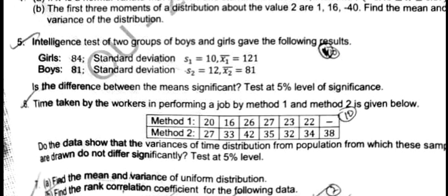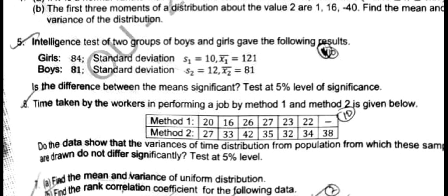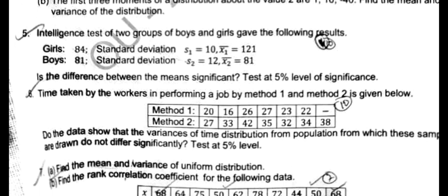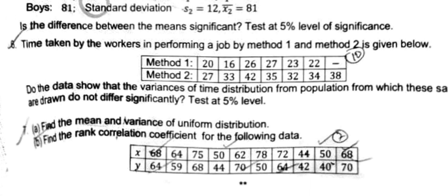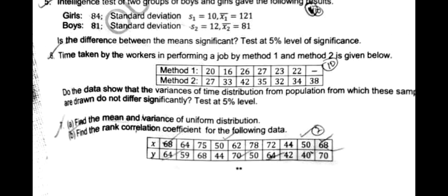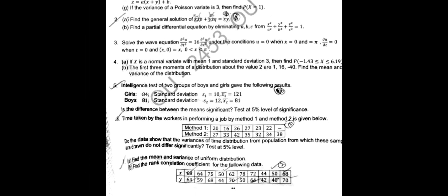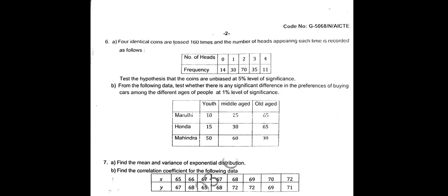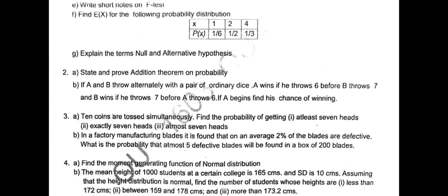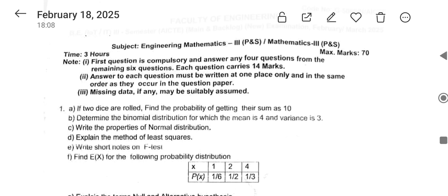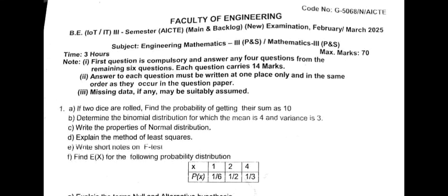Sixth one is variances, F-test. Seventh main A is mean and variance of uniform distribution, and B is find rank correlation. So all direct, direct questions he asked this time. Compared to last year, last year civil and mechanical paper, also last semester was easy only. But little bit lengthy for IT and AIDS. Okay, I hope you done well in the exam. Thank you.